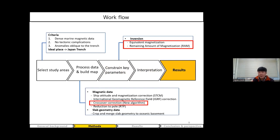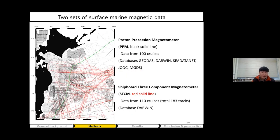I introduced a crossover analytic method, merging the magnetic data collected by two different sensors. The black solid lines indicate data collected by the proton precession magnetometer (PPM), and the red solid lines indicate data collected by the shipboard three-component magnetometer (STCM). In the area close to Japan, many PPM data are collected, while outside that area many regions are still empty and filled with STCM data.